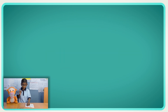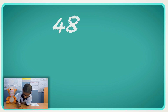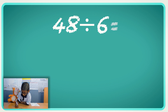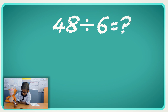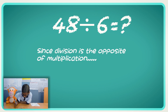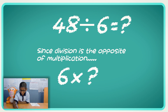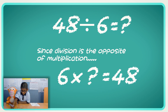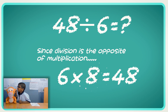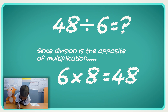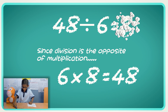Let's do one more. 48 divided by 6. I don't like it. Today, we are going to do 6 times what equals 48. I don't know. 6 times 8! So 6 times 8 is 48? Yeah. So 48 divided by 6 is 8. Yeah. Oh, this is so cool.